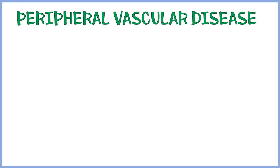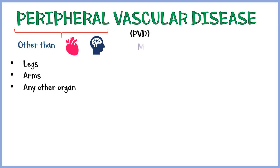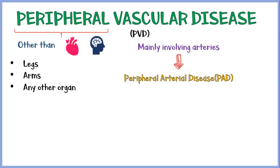Peripheral vascular disease, or PVD, is a condition involving blood vessels other than the ones which supply the brain and the heart, like legs, arms, or any other organ. PVD mainly involves arteries, so sometimes it is called peripheral arterial disease, or PAD.